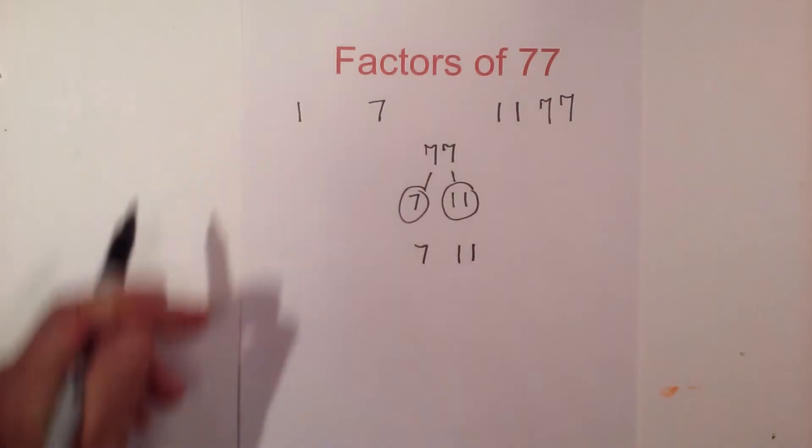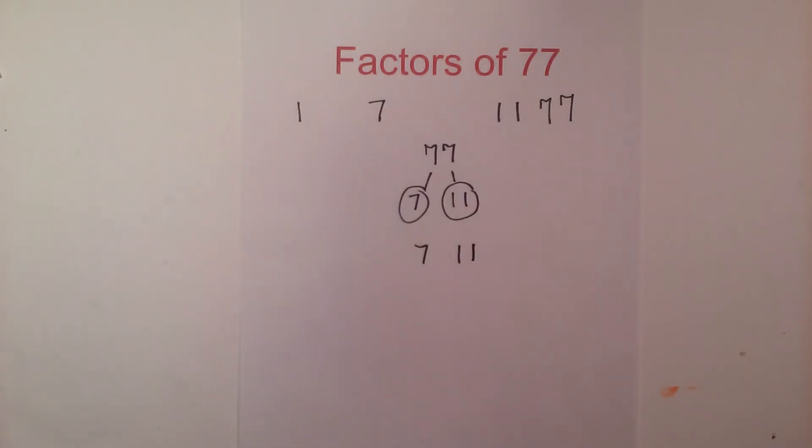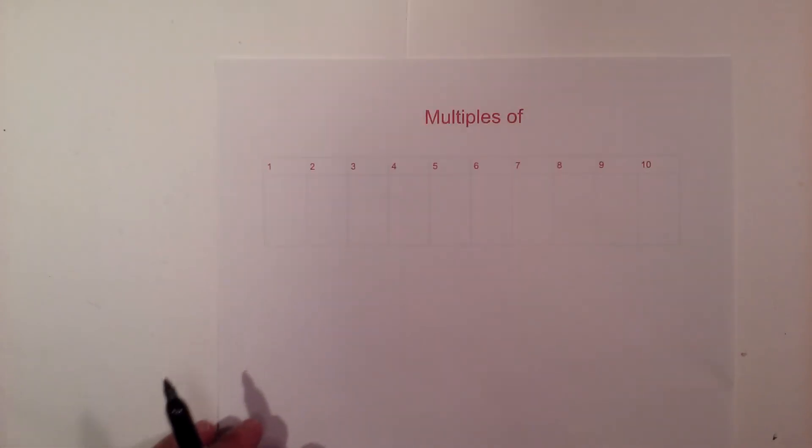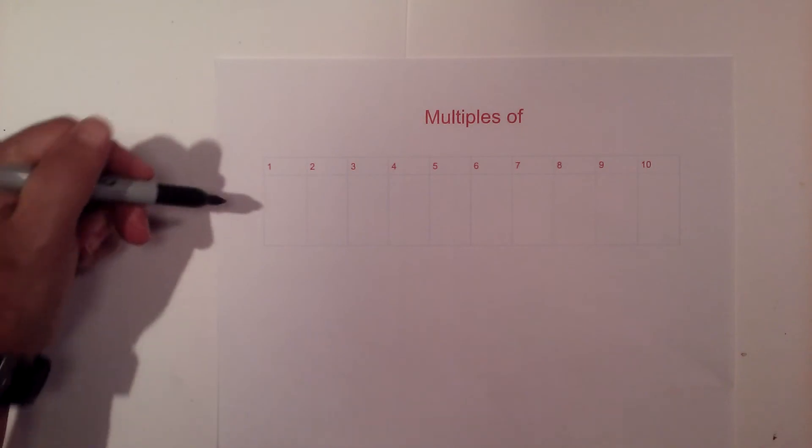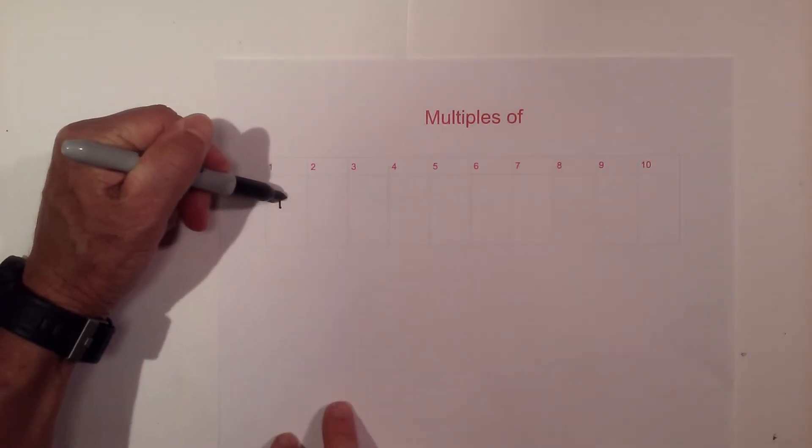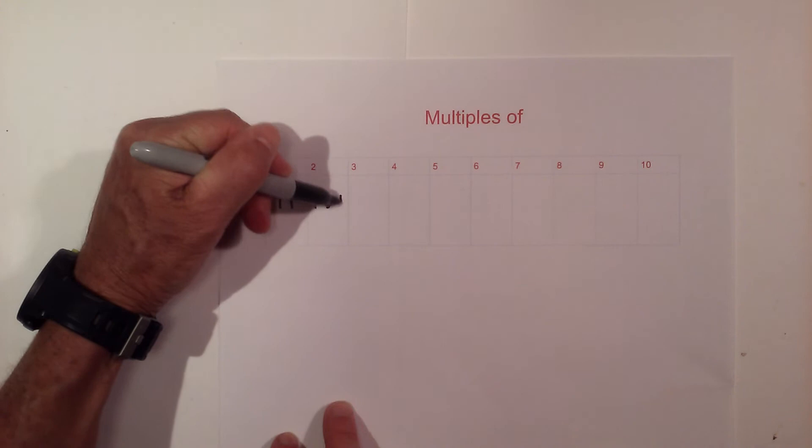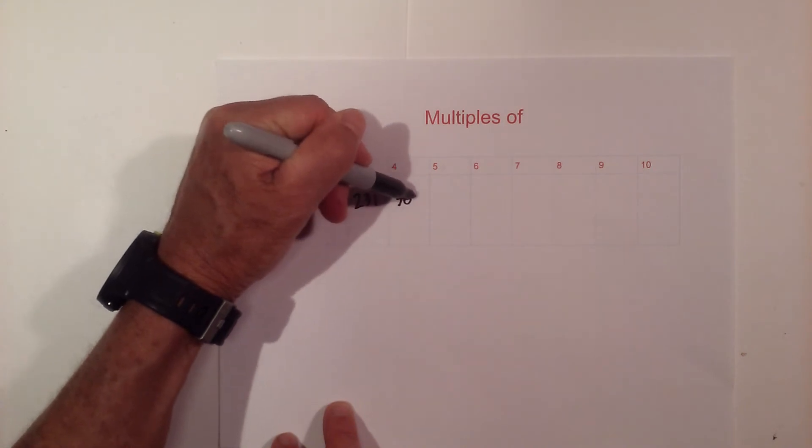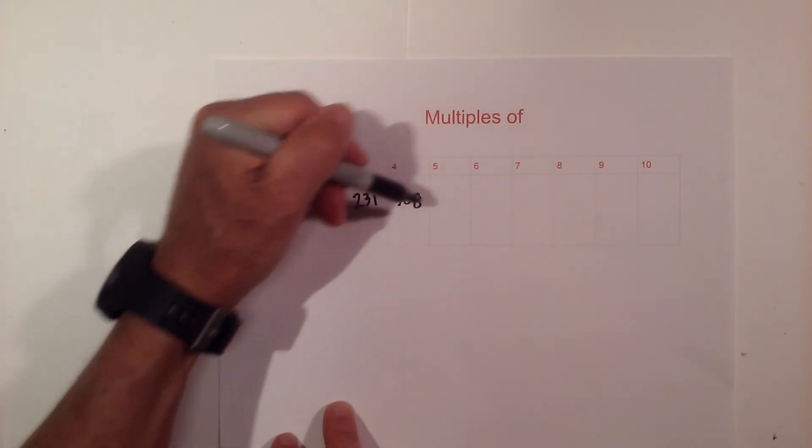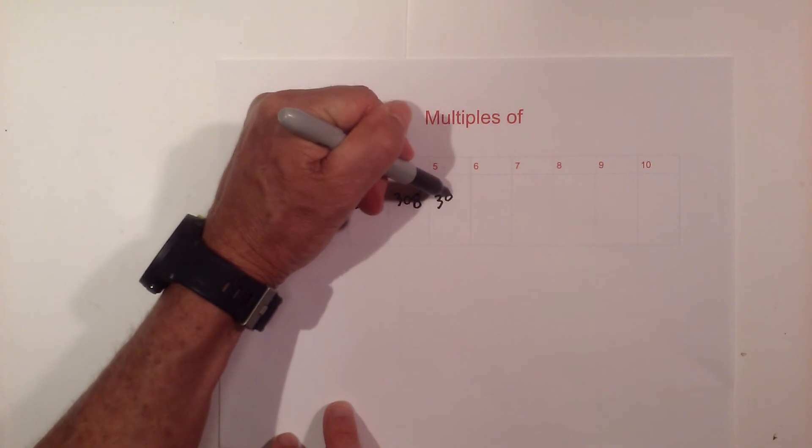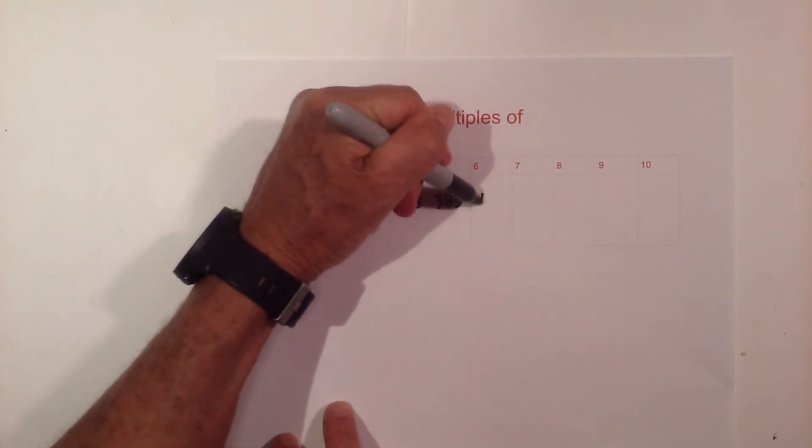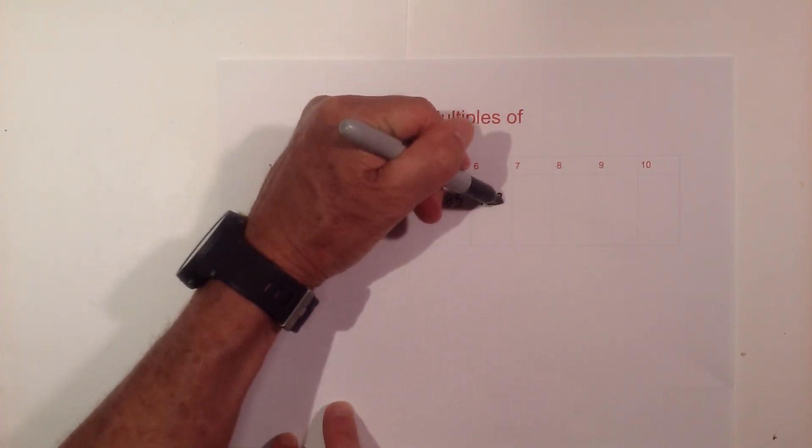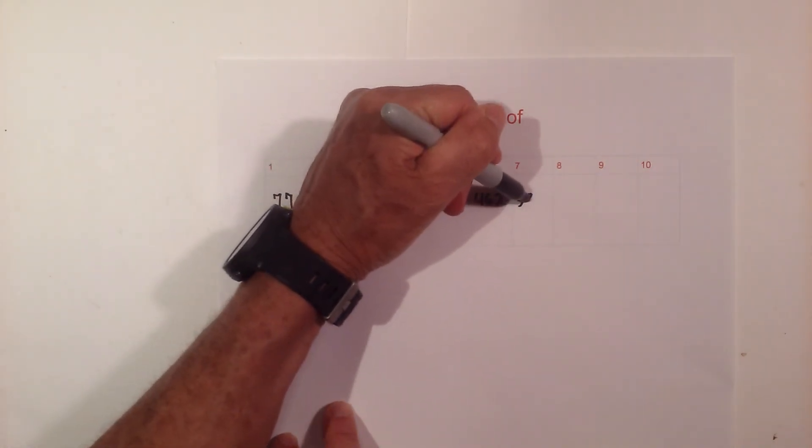Now let's go through the multiples of 77. Okay, the multiples of 77 are as follows: we have 77, 154, 231, 308, 385, 462, 539...